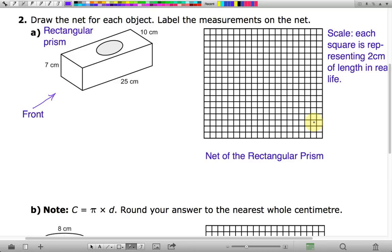I should mention that the scale we're going to be using is each square is representing two centimeters of length in real life. So let's take a look at this rectangular prism, it kind of looks like a box of Kleenex. Let's be clear about all the dimensions here. We have a width across this box of 10 centimeters, so this is also 10 centimeters across here and this is also 10 centimeters across here. The height of this box is 7 centimeters, so that's 7 centimeters here and this is 7 centimeters here. And the depth of this box is 25 centimeters across.